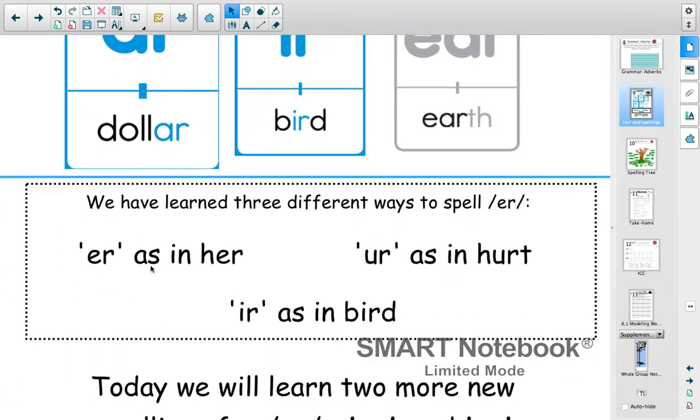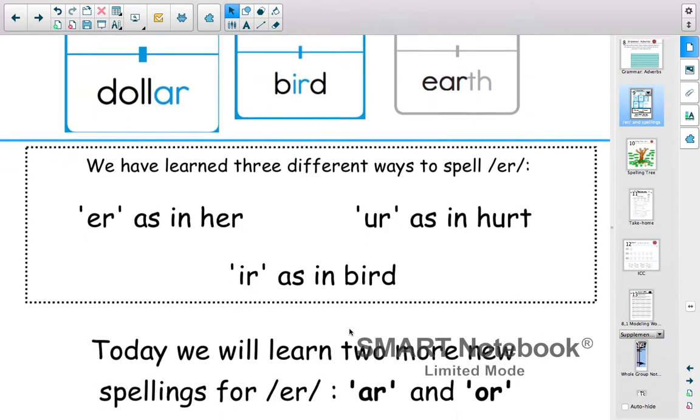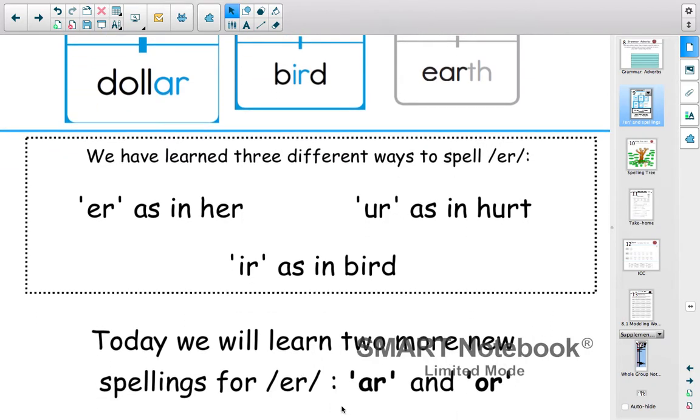So we've had E-R as in her, U-R as in hurt, I-R as in bird. The spellings today are really focused on the A-R and the O-R.